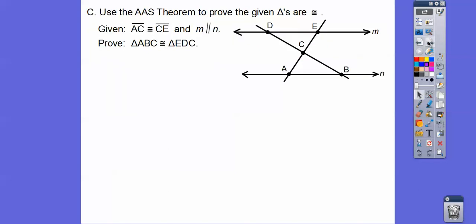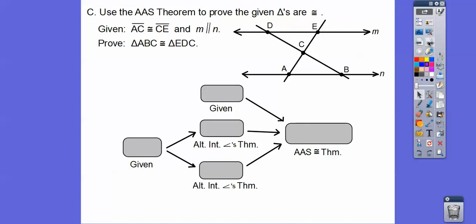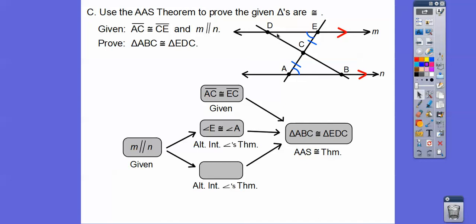Let's use the AAS theorem to prove that the given triangles are congruent with a flowchart proof. The givens go in, and the proof statement goes at the end. We have parallel lines marked with arrows cut by a transversal, forming alternate interior angles: angle E is congruent to angle A, and angle D is congruent to angle B. So by angle-angle-side, the triangles are congruent.